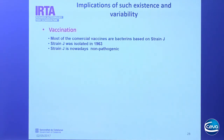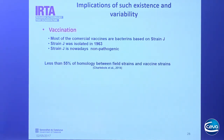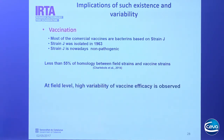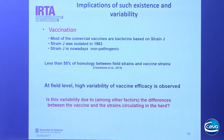Finally, let's look at the implications of strain variability for vaccination. Most commercial vaccines currently available are bacterins based on strain J, which was isolated in 1963 and is non-pathogenic. It has been described that the homology between field strains and the vaccine strain was less than 55% in at least one study. This raises the question whether the different vaccine efficacy observed in the field could be attributable to differences in homology between the vaccine strain and field strains.